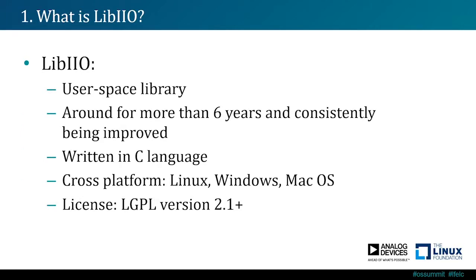LibIIO is an open source user space library. It's been around for more than six years and it's consistently been improved. It has been written in C language and it's cross-platform — it works on Linux, Windows, and macOS. The code is released under the LGPL license version 2.1 and above.